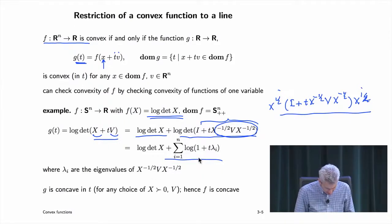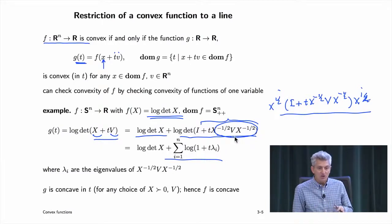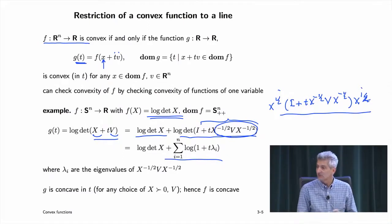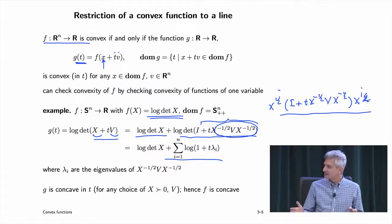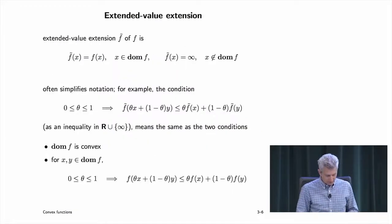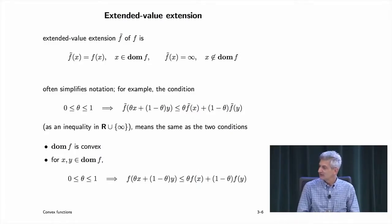The lambda_i's are the generalized eigenvalues of the pair (x, v). If you have an advanced linear algebra background, this does not look mysterious at all. This result has been known for about a hundred years — the fact that the log determinant is concave.